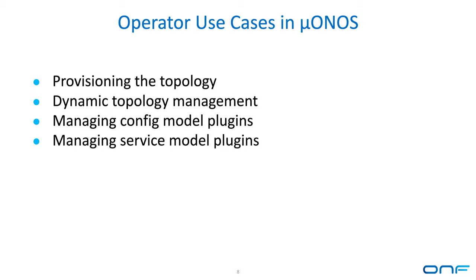The use cases we were interested in for micro ONOS were: provisioning the topology — up until now we were populating ONOS topo after the cluster came up using a post-install job hook in Helm charts, which was problematic. An operator allows us to define the topology in the Helm chart by adding custom objects for entities. The operator can also dynamically manage the topology, and it can manage the config model plugins, which I'll talk about in the ONOS config section.